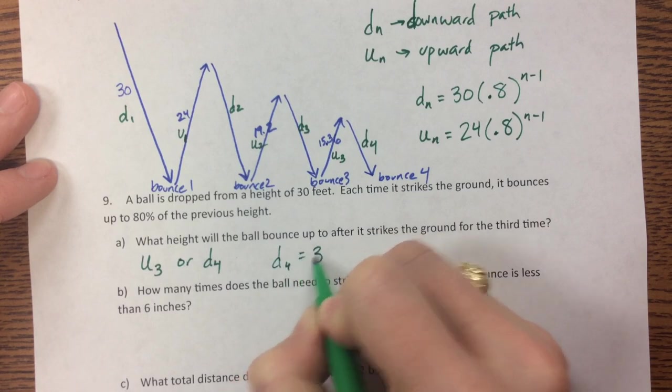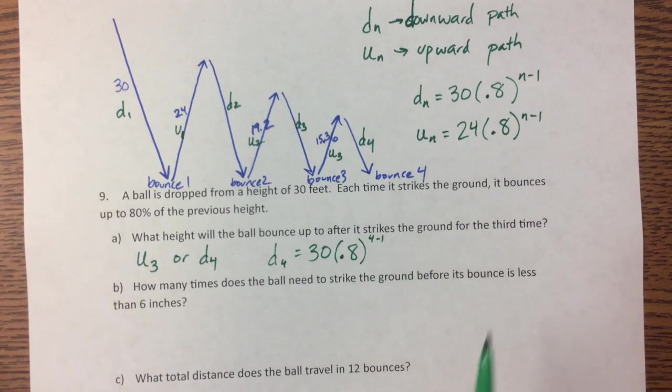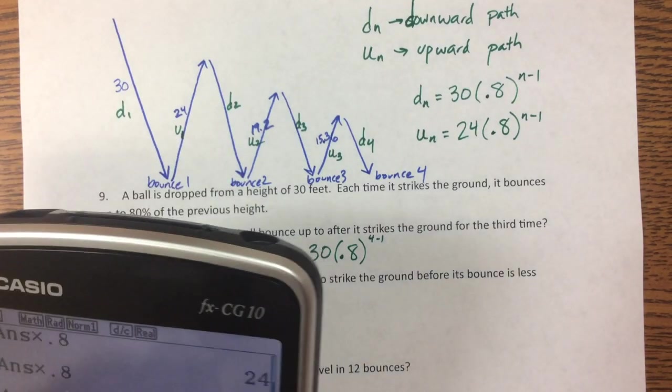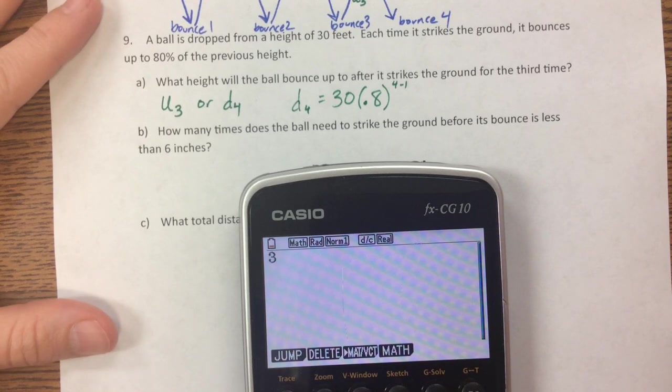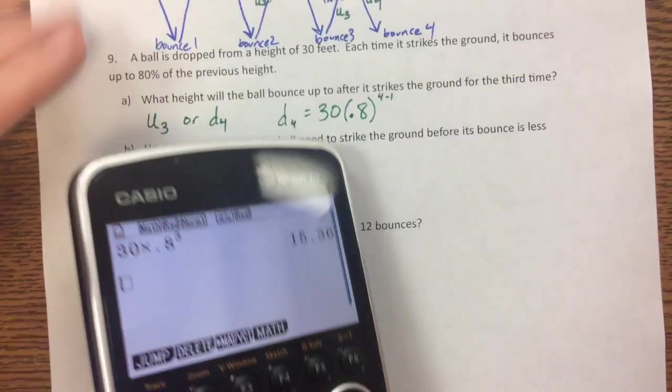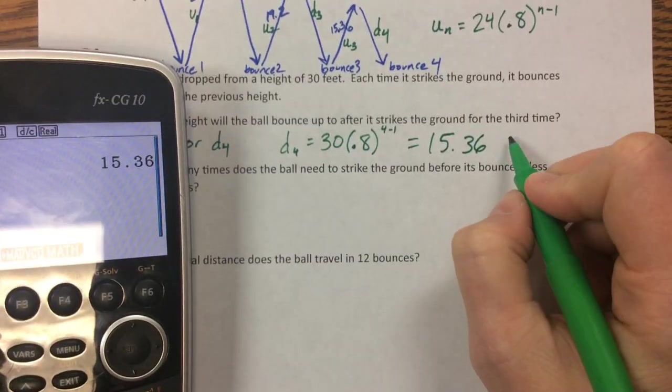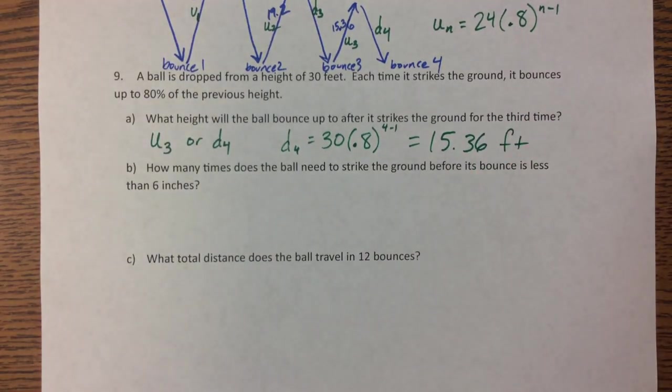So what height will the ball bounce up to after it strikes the ground the third time? After the third time, that's u_3 or d_4. So d_4 is 30 times 0.8 to the 4 minus 1. We already know the answer, but 30 times 0.8 raised to the third power ends up being 15.36, and our units are feet.